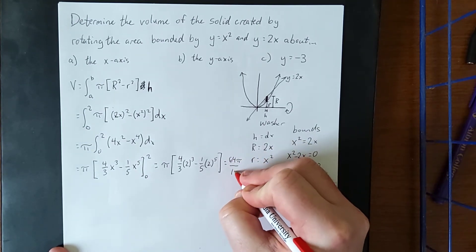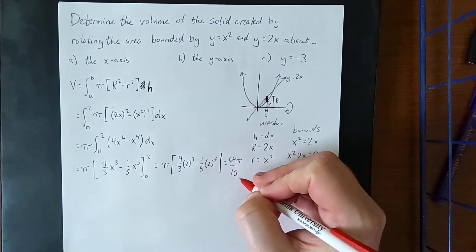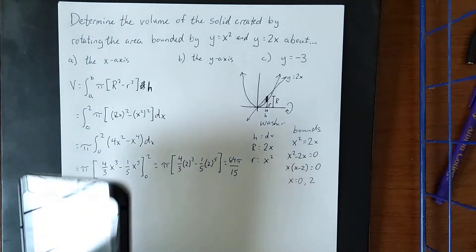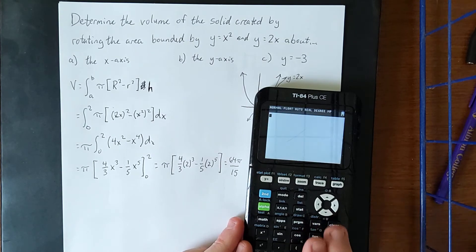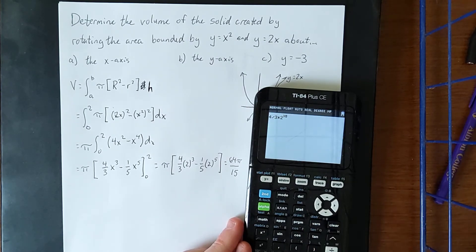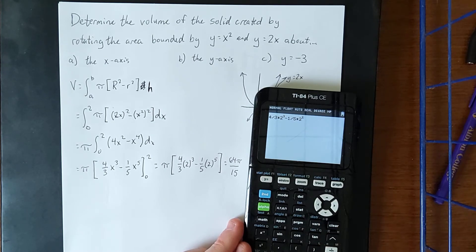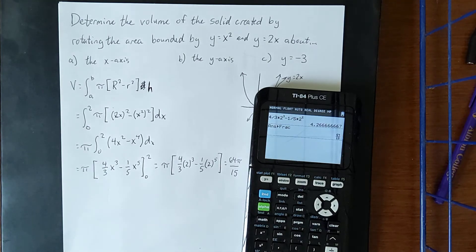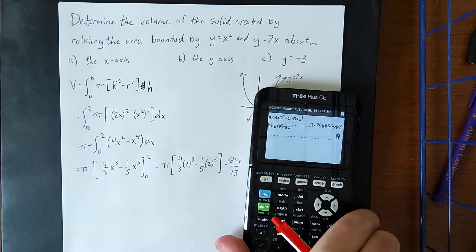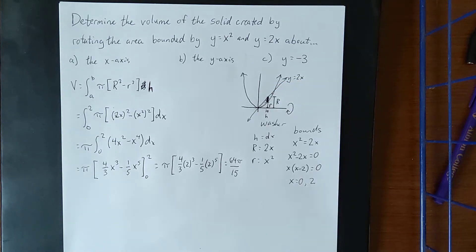In this form we are ready to integrate. 4x squared becomes four-thirds x cubed, and x to the fourth becomes one-fifth x to the fifth, evaluated from 0 to 2. Plugging in the bounds gives pi times four-thirds times two cubed minus one-fifth times two to the fifth. Using a calculator to verify, the result is 64π over 15.